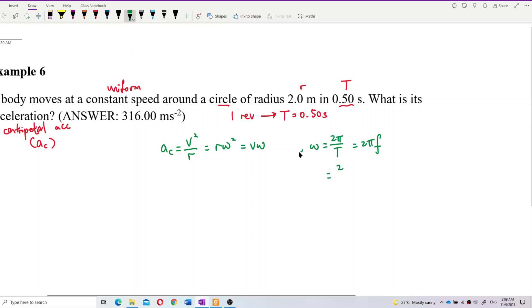So omega is 2 pi over 0.5. That's the omega. So we can use this to substitute into here. And we use this one, R omega square, because we have omega already.